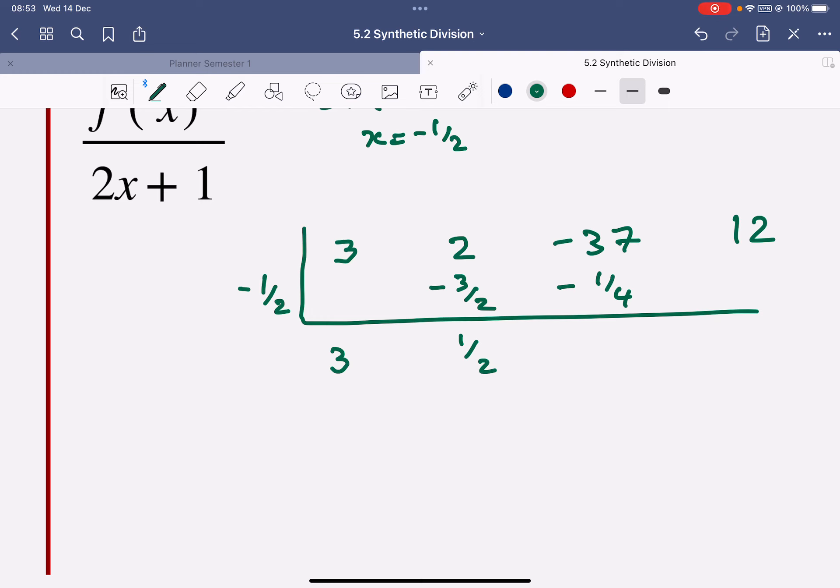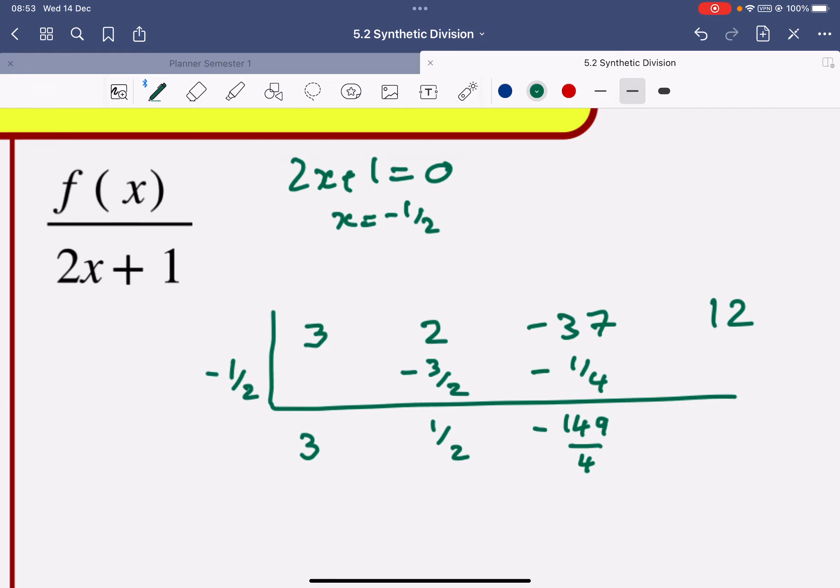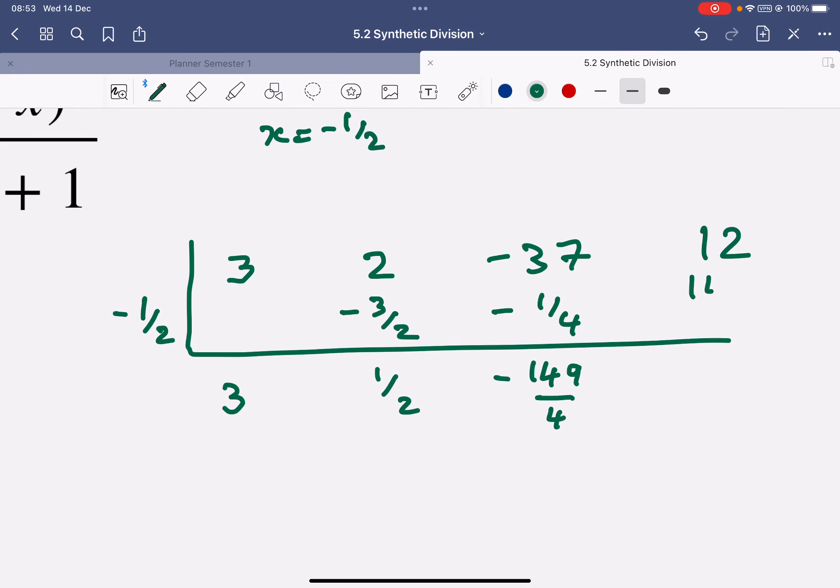So I'm going to do 37 times 4, which is 148. And add these together. So this is going to give me negative 149 over 4. I'm just doing these calculations. So it's 149 plus 149 over 8.